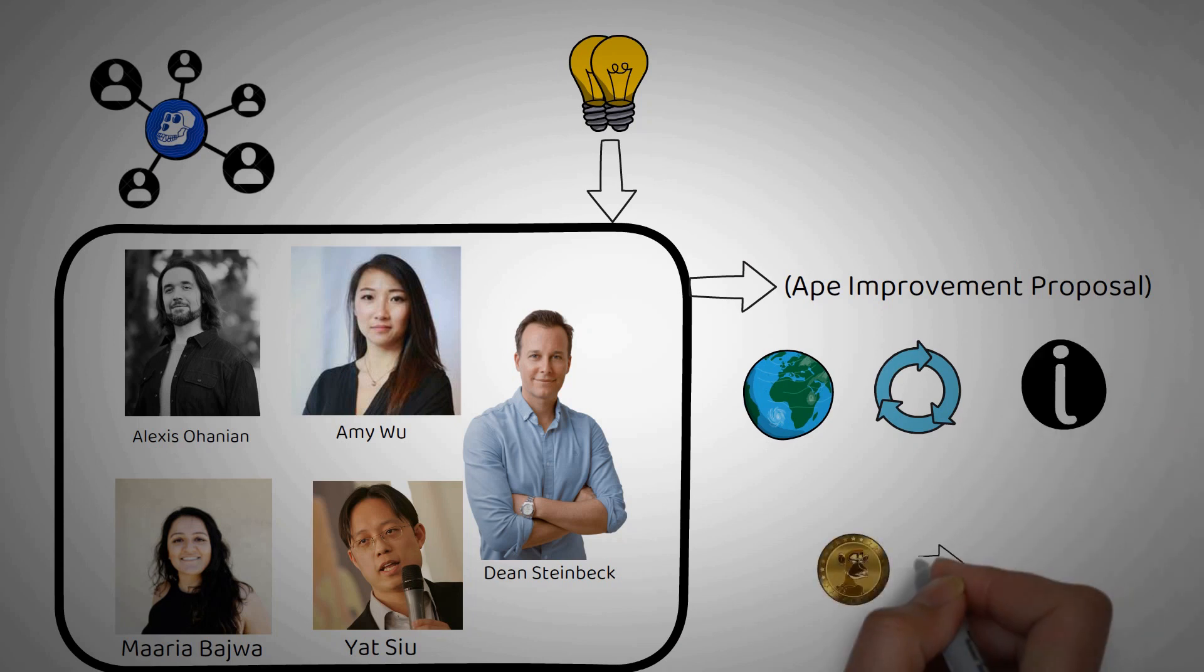Each ApeCoin is entitled to one vote, with fractions rounded down. Members may delegate their votes. If 51% or more votes are cast, implementation moves forward. It's easy to understand.